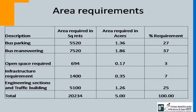Regarding the area requirement — why 5 acres for 100 buses: parking of buses requires 27% of area; manoeuvring of buses requires 37%; open space as per legal requirement is 3%; infrastructure such as fueling shed and washing shed requires 7%; and engineering and traffic sections including pits require around 25%. So only 27% is required for parking of buses, but to ensure best maintenance practice and optimum maintenance of buses, 73% of area is required. These are the standards and you cannot compromise with them.